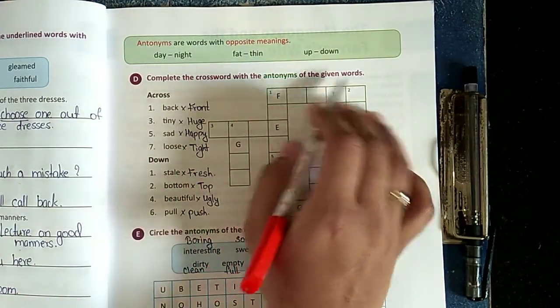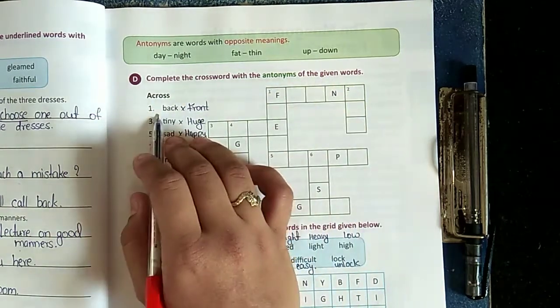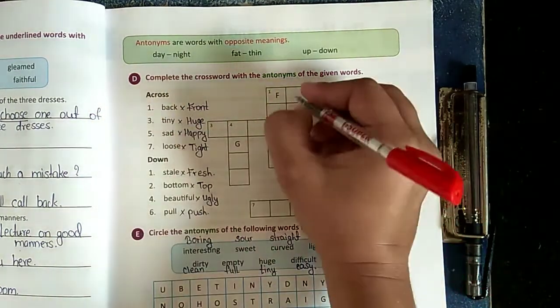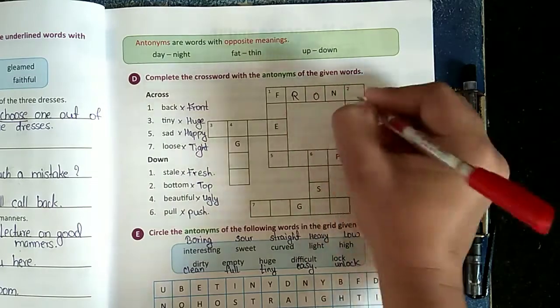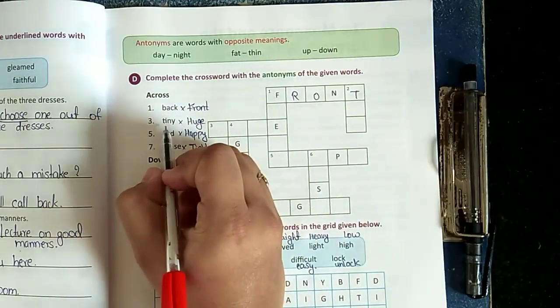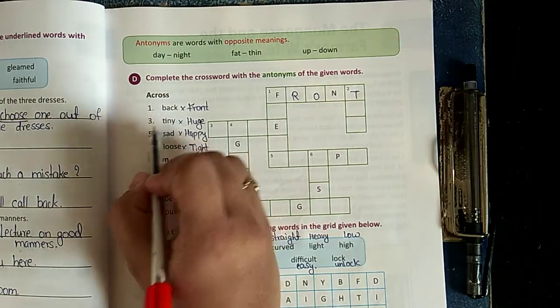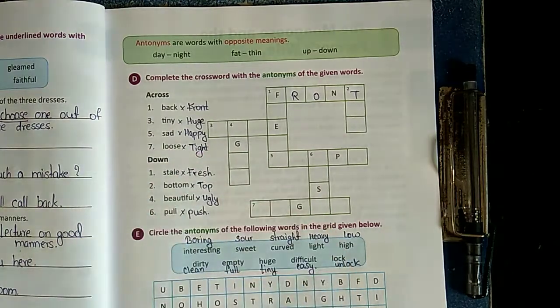So here, let's do the exercise. Complete the crossword with the antonyms of the given words. Back - front. Let's write in the box: F-R-O-N-T. Tiny - tiny will become huge.